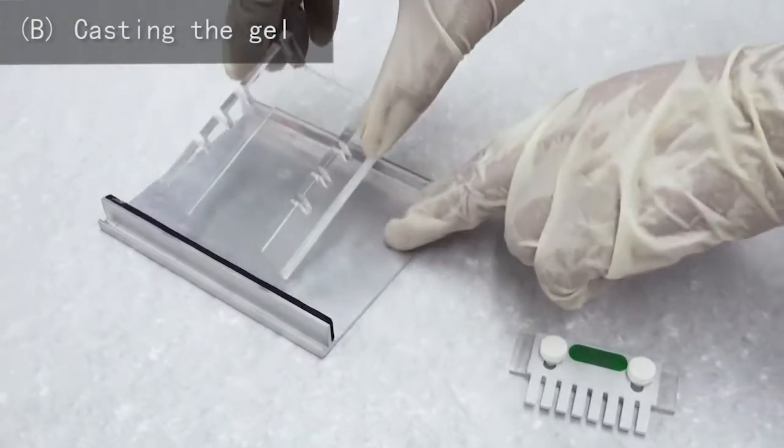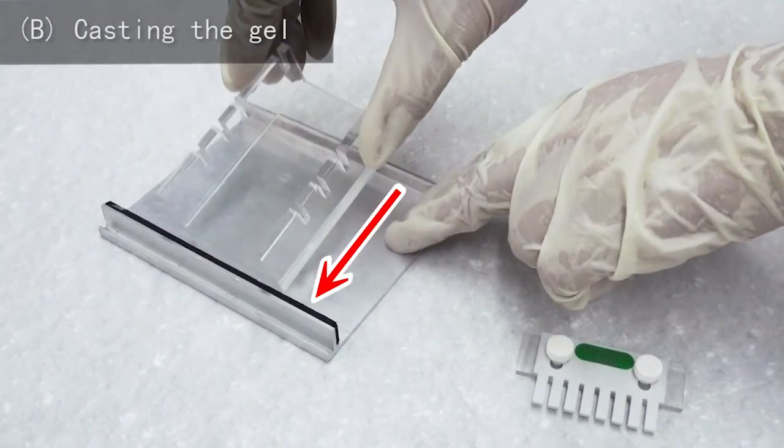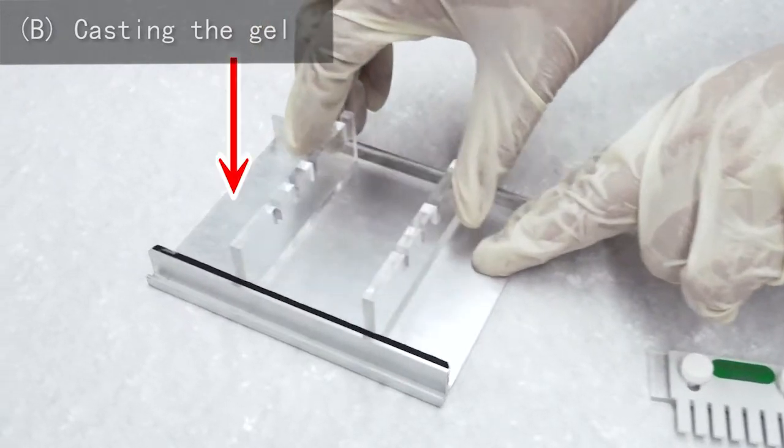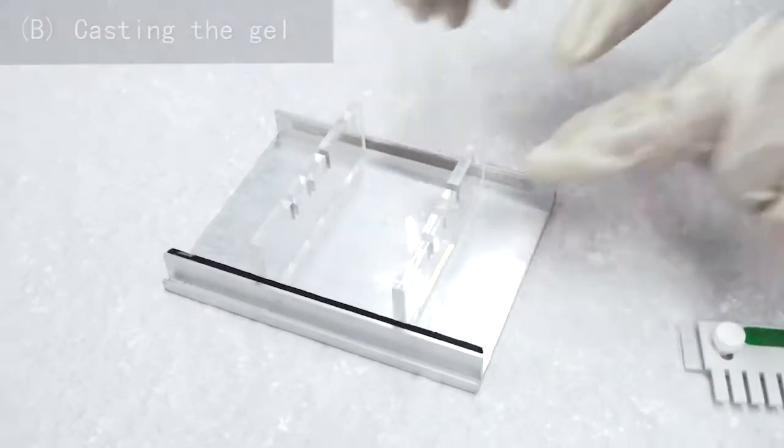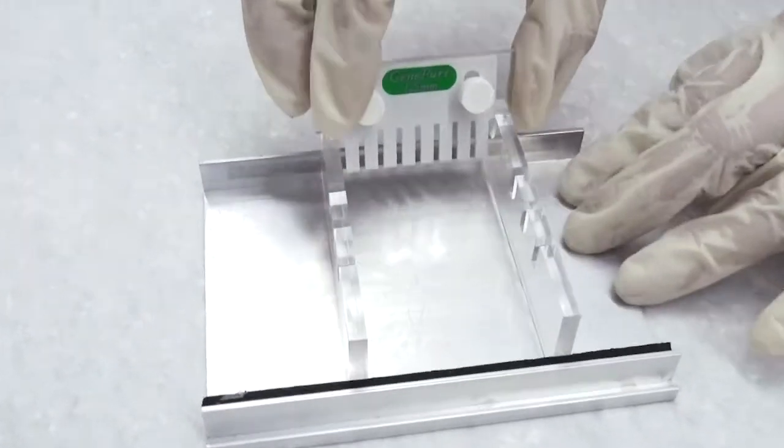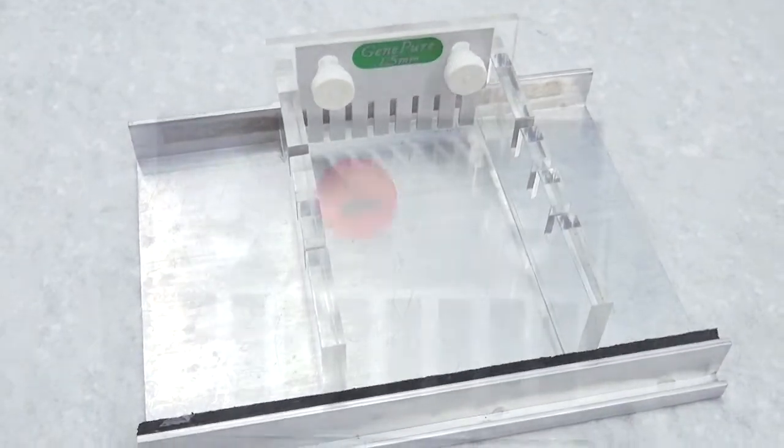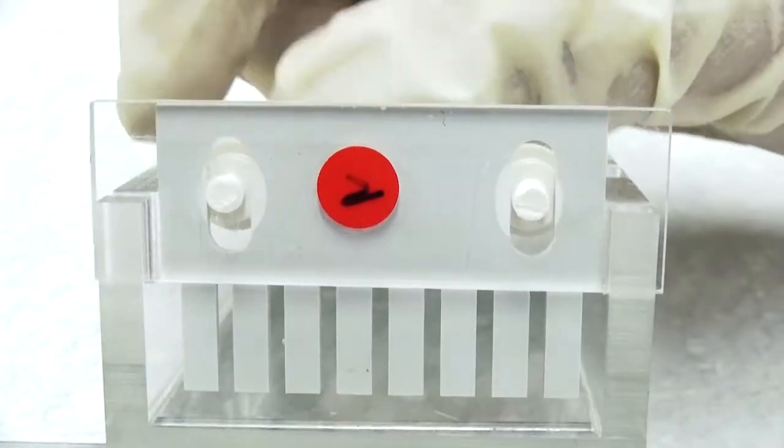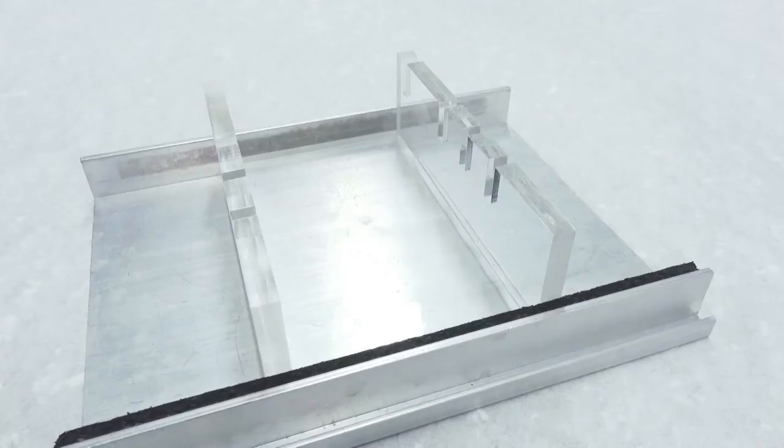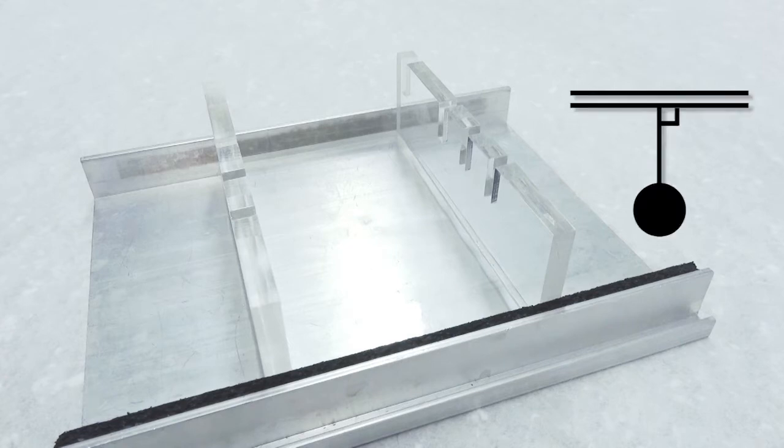Place the clean and dry gel tray into the casting plate. It should be a tight fit. Install the comb and adjust the height so the bottom of the comb is 0.2 cm above the inner surface of the tray. On the outside of the tray, mark 0.5 cm above the inner surface of the tray. Remove the comb and place the casting plate on a level table.